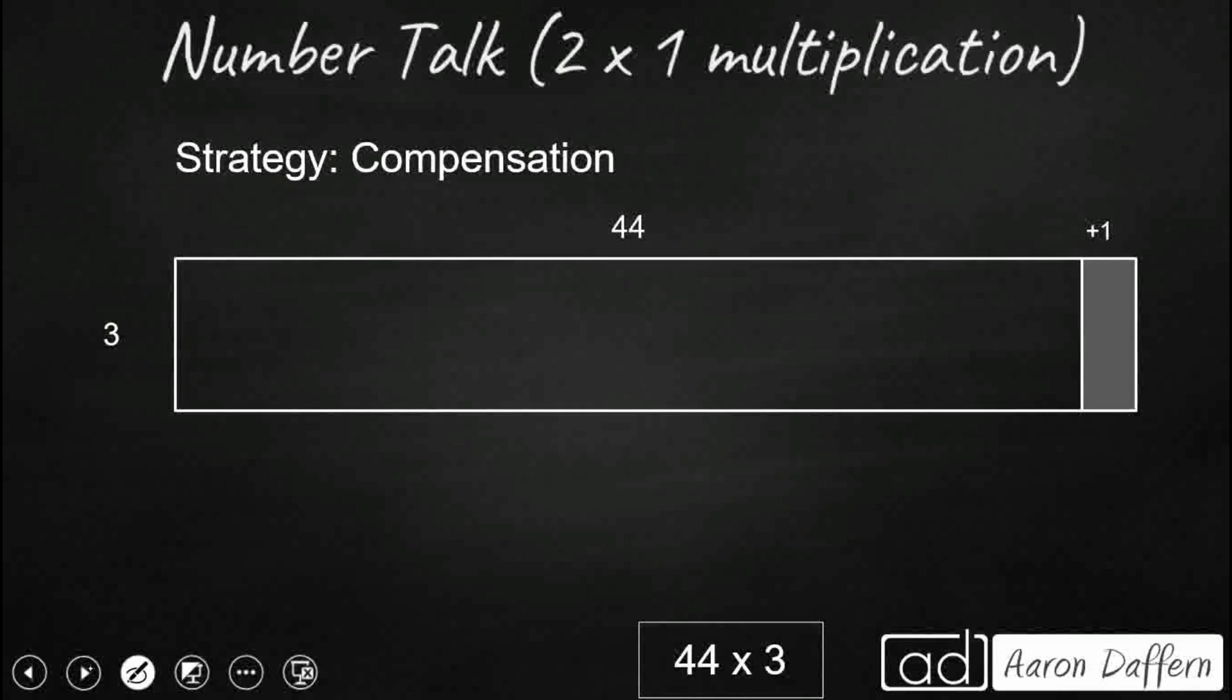Some of us might have used compensation. Compensation is nice because this 44 is not really easy. But what we can do is say, you know what, if I add this one, 45—multiplying by 5s is a lot easier than 4s. So what if I said that's 45 times 3? So 45 times 3, this whole thing, it's going to be 45 times 3. Two 45s is 90 and three 45s is going to be 135.